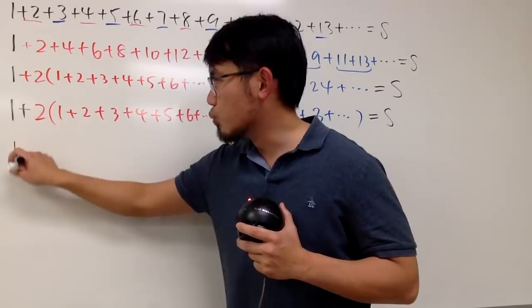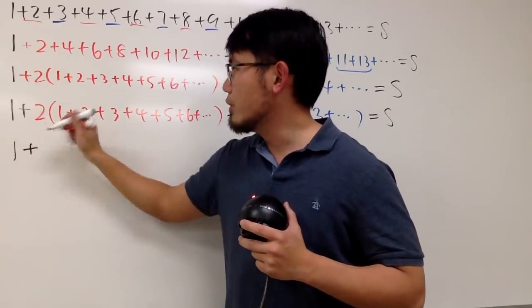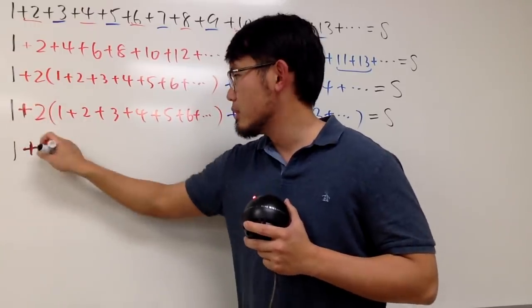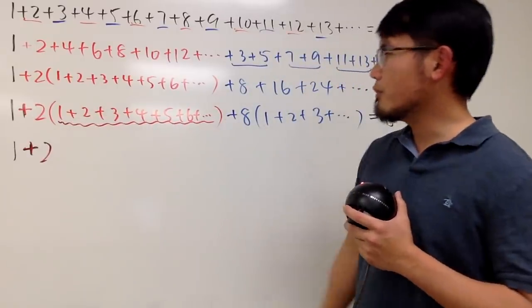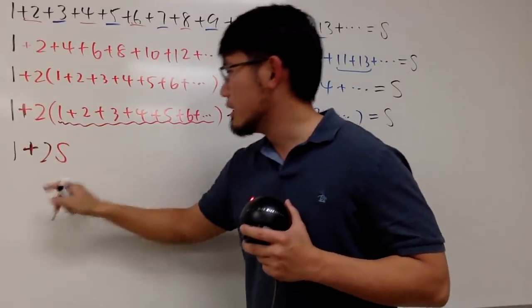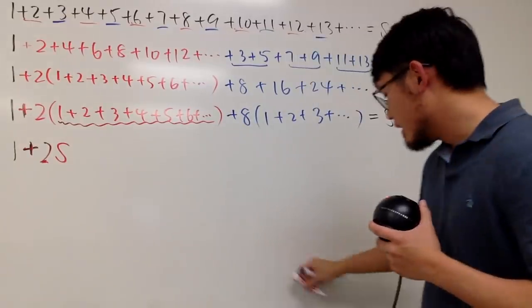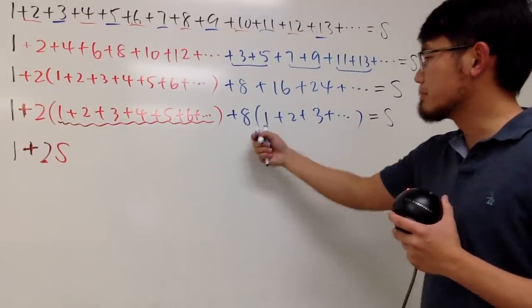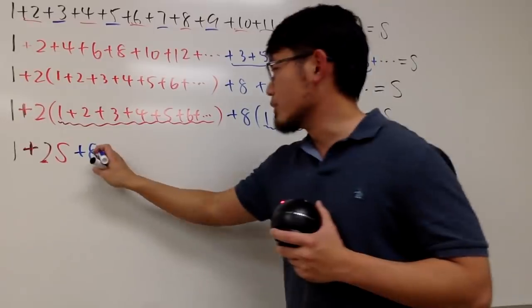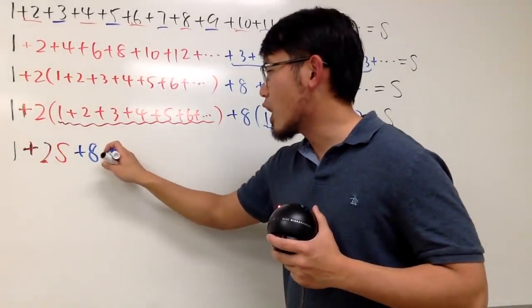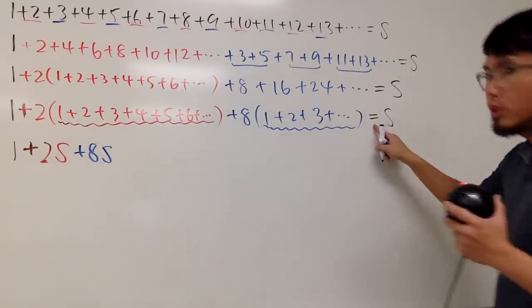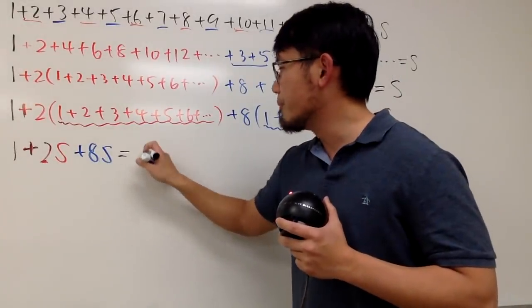And now, take a look. This right here is 1. No problem on that. Plus 2. And by the way, the plus should be in red. Yeah. Plus 2. And now, what's this? 1, 2, 3, 4, 5, so on. Add them up. We called this to be S, didn't we? So put on S. This is not 25, this is 2 times S. And then, take a look right here. This is plus 8. And then, right here you see, 1, 2, 3, 4, 5, 6, and so on. You don't see it, but they are there. It's also S right here. And look at this right here. 1 plus 2S plus 8S is equal to S. So we can call this to be S.